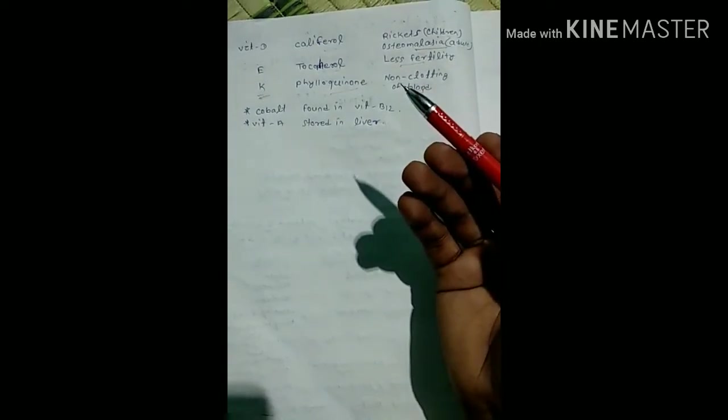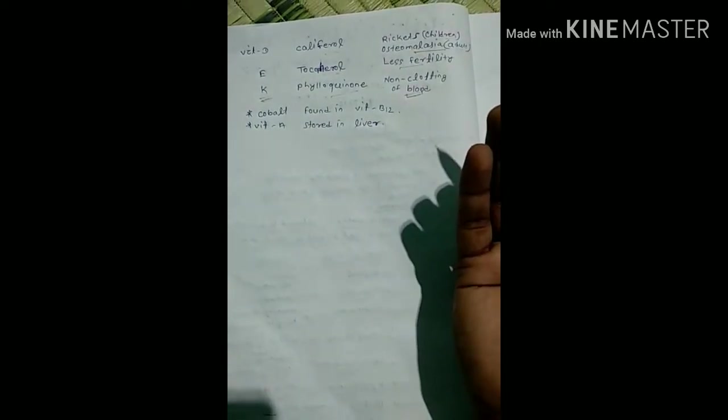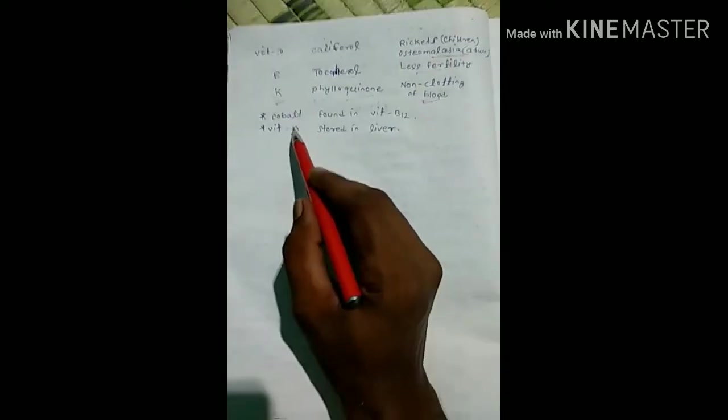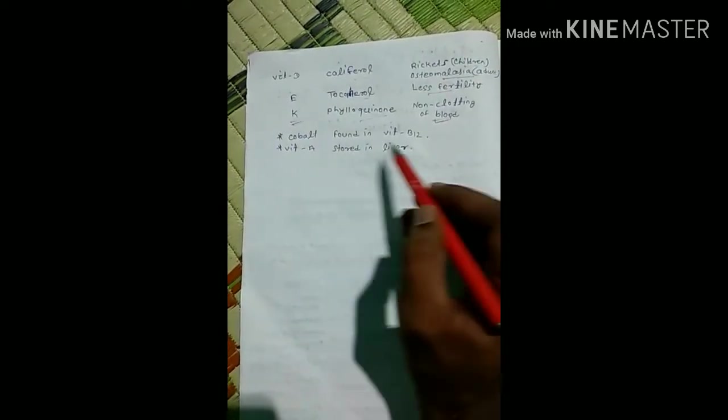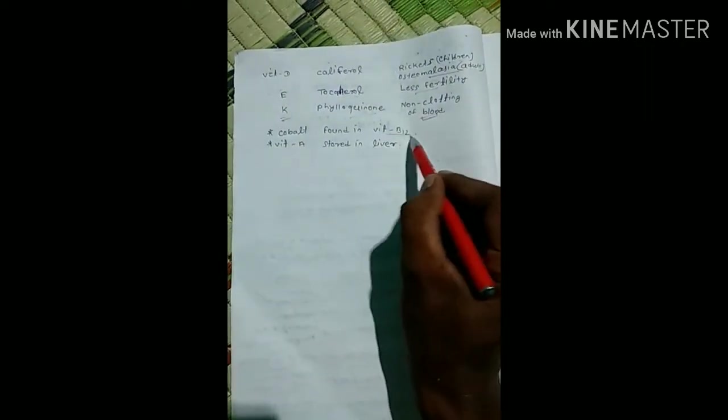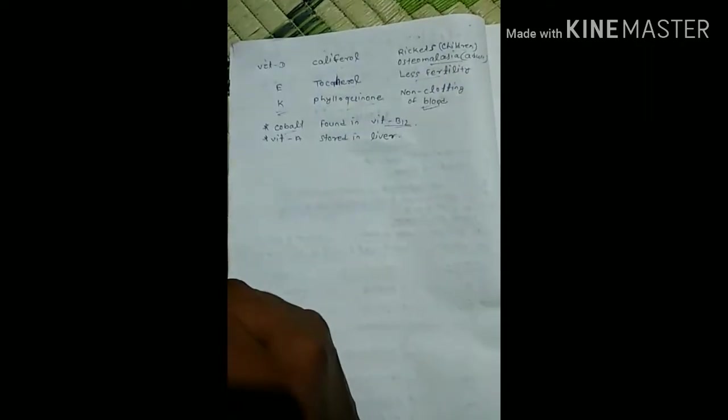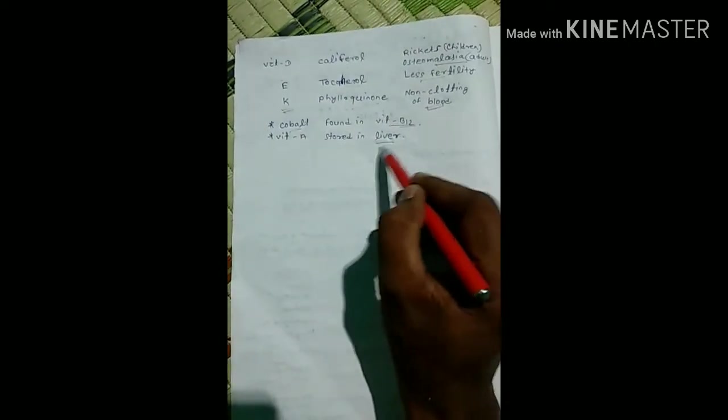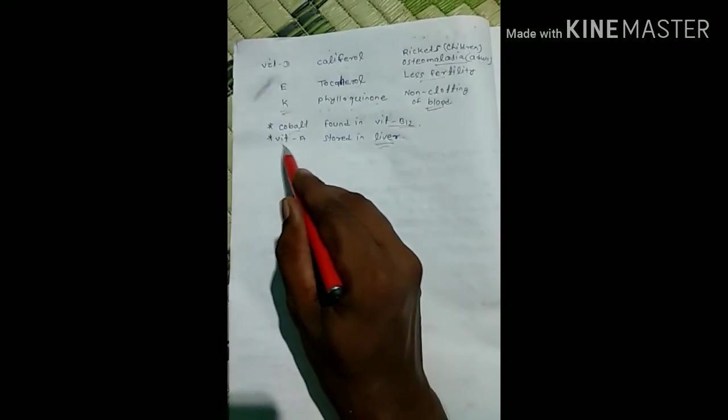Two important points: cobalt is found in vitamin B12, and vitamin A is stored in the liver.